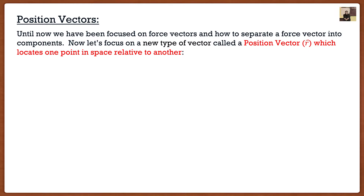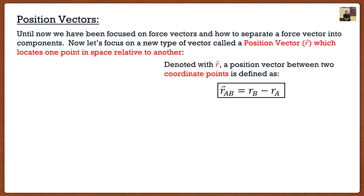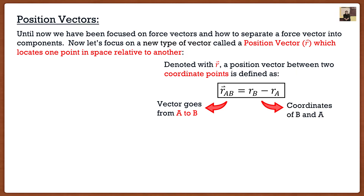A position vector locates one point in space relative to another. It's denoted as R with an arrow. To find a position vector between two points, you take the coordinates of where you end up minus your initial coordinates. So for position vector AB — which goes from A to B — you take the coordinate points of B and subtract the coordinate points of A. The first letter in the subscript is where it starts, the second is where it ends.